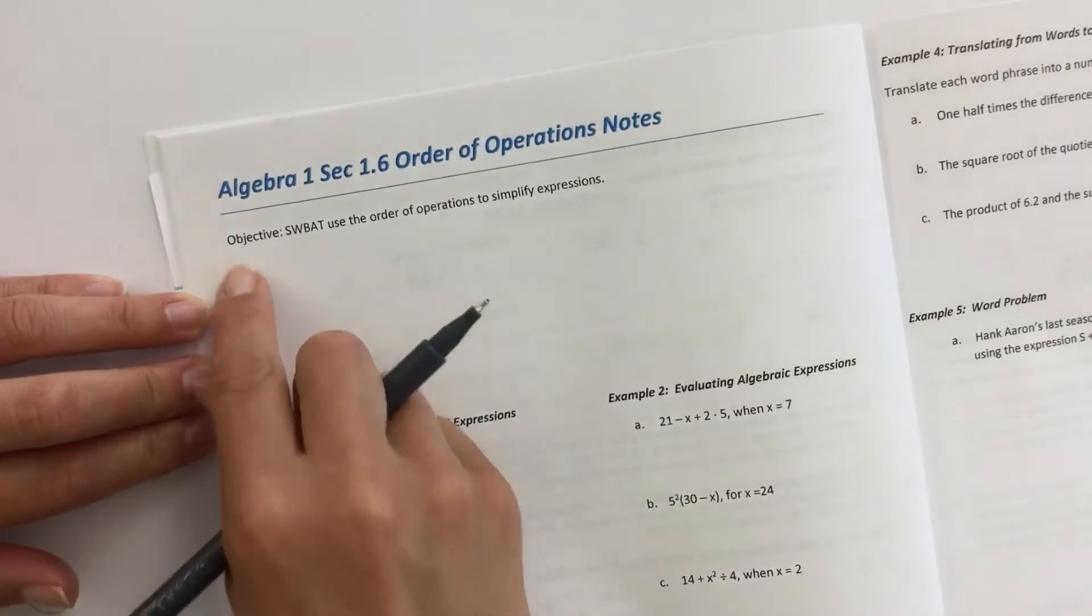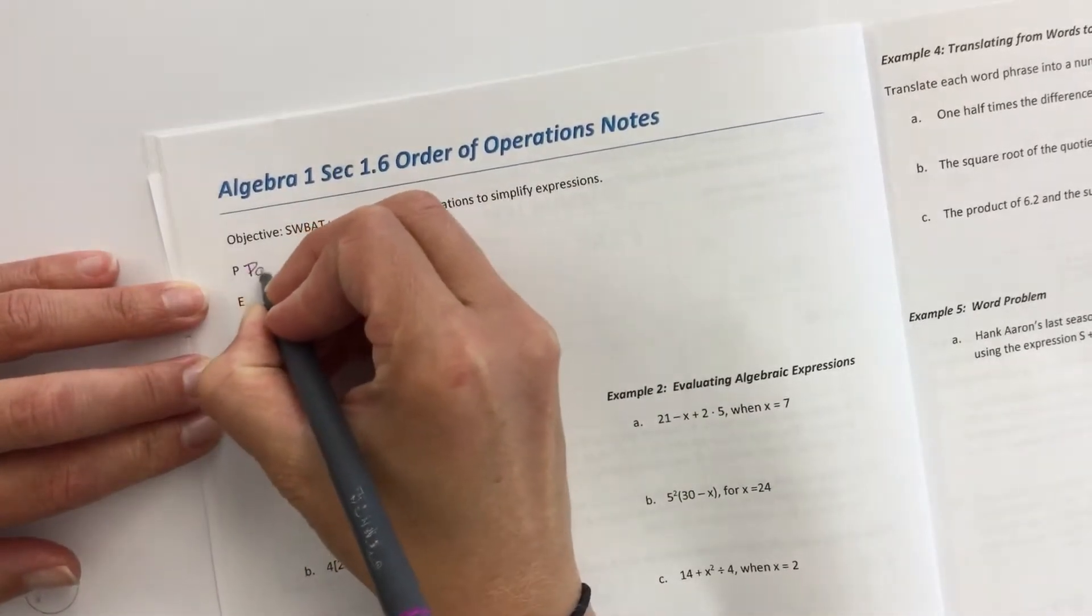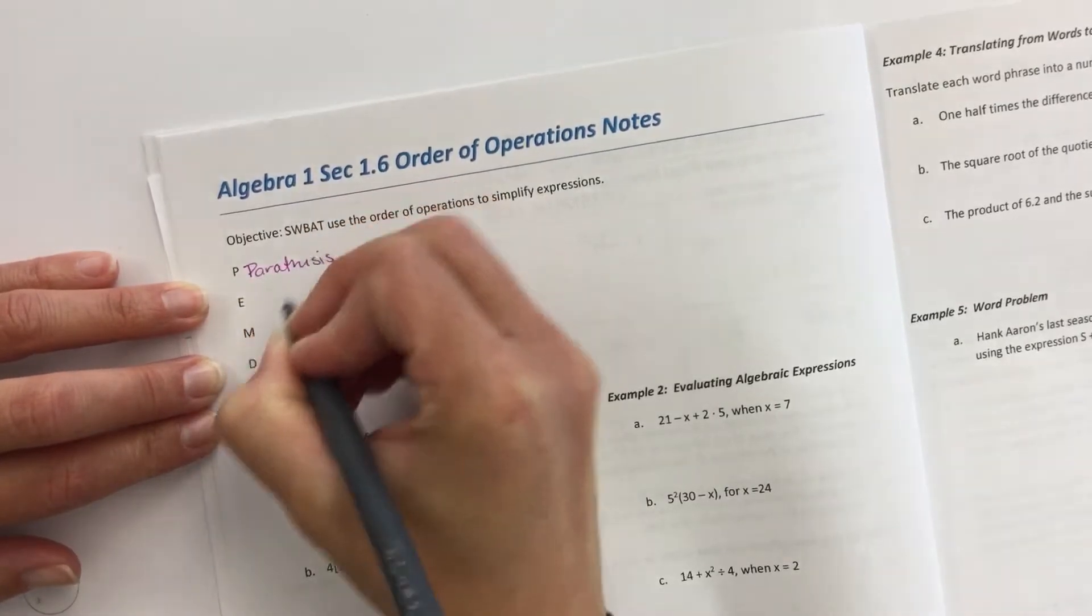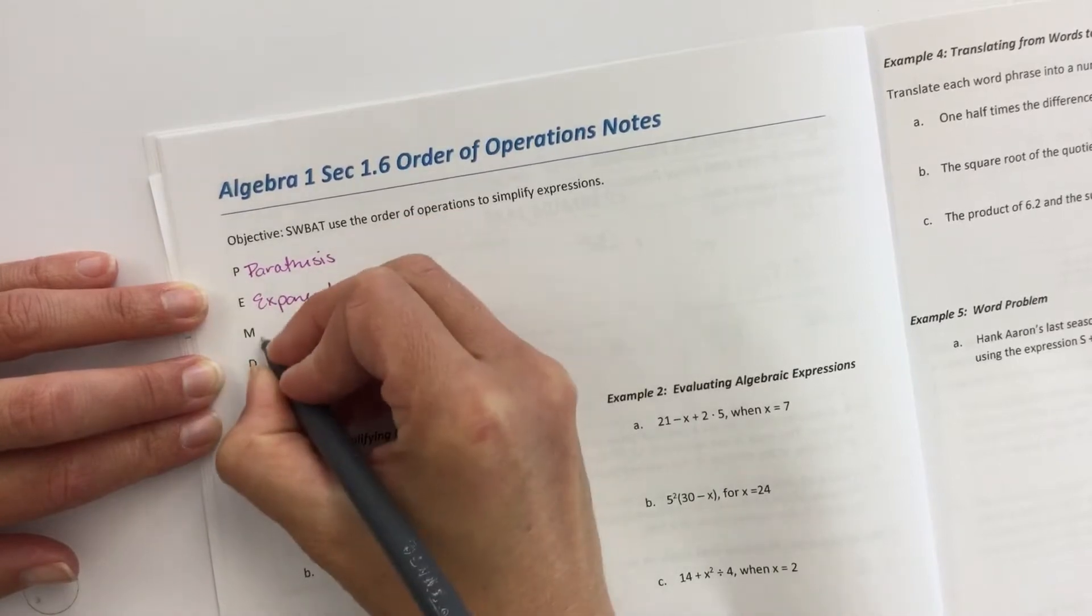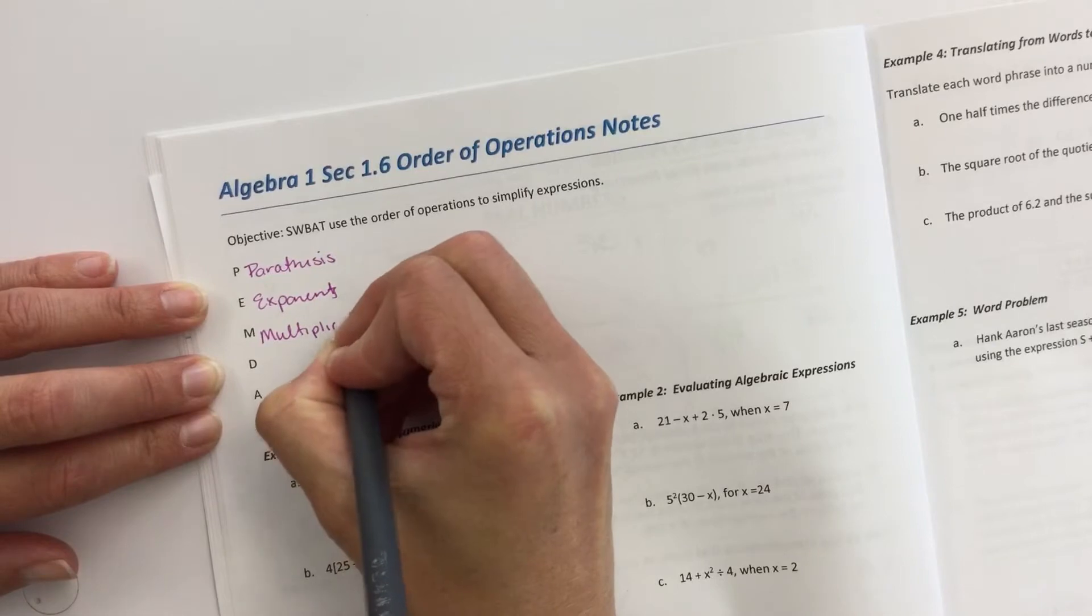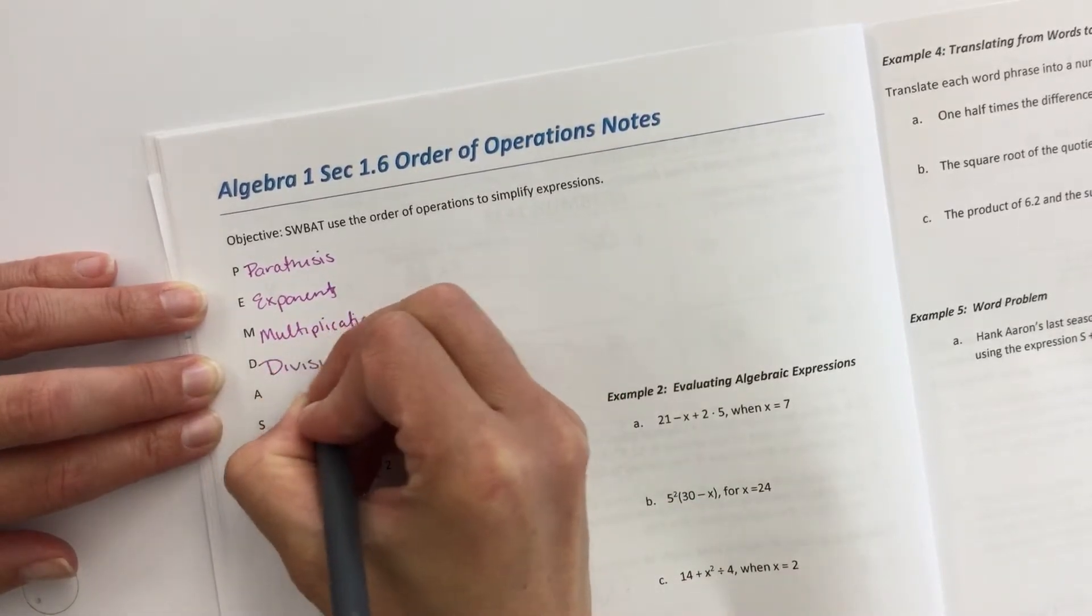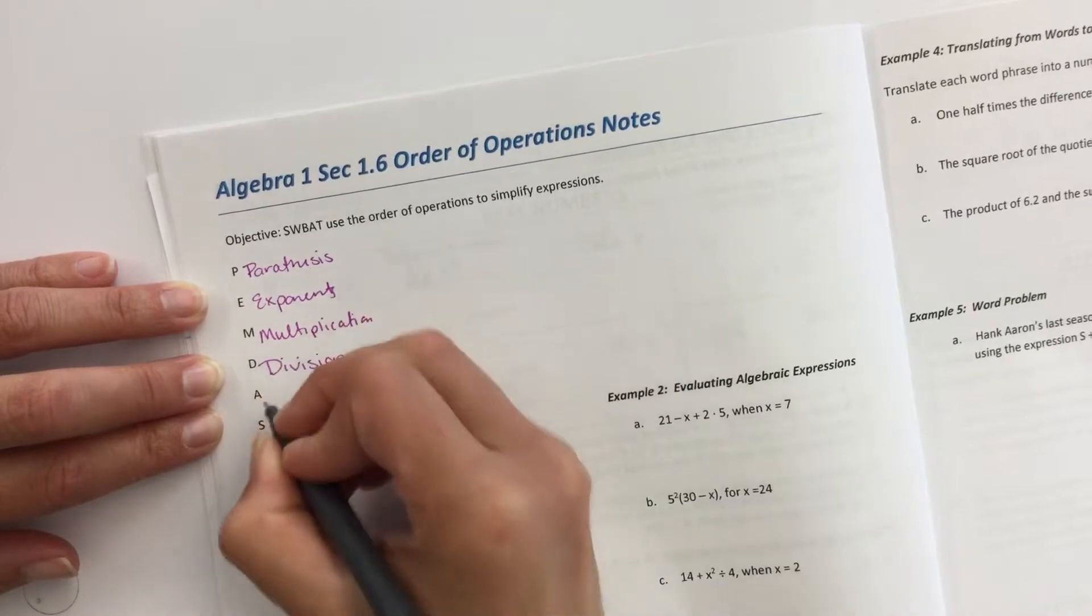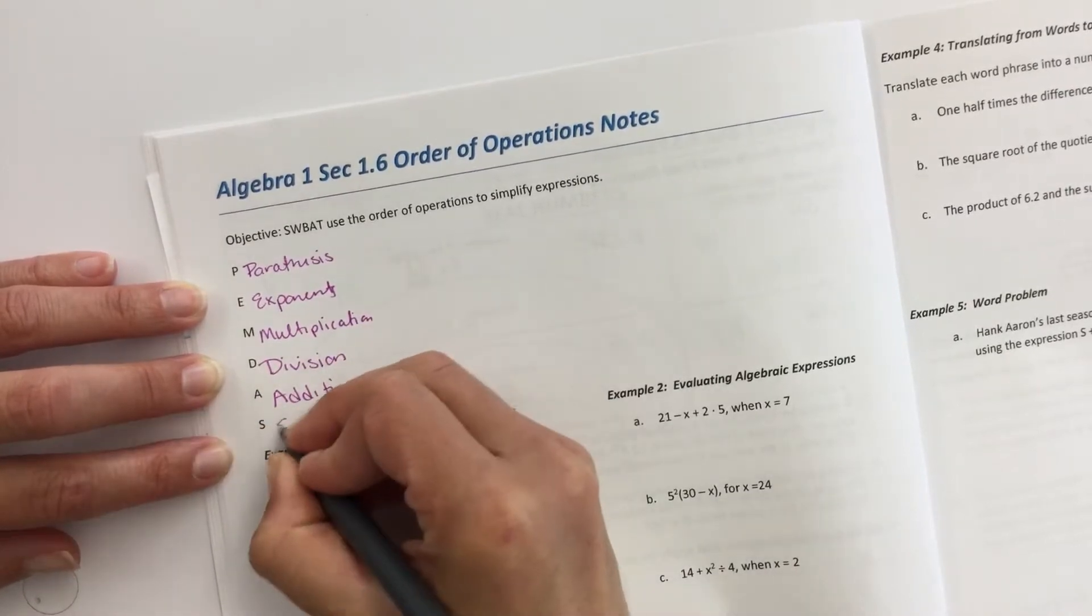So really quick, I've got our PEMDAS, the Please Excuse My Dear Aunt Sally, so this would be parentheses, exponents, multiplication, division, addition, and subtraction.